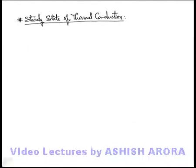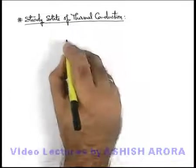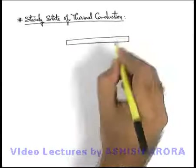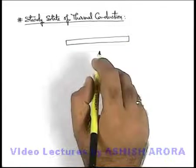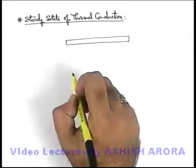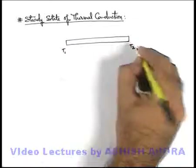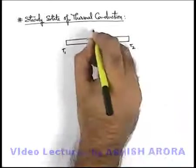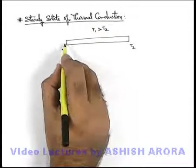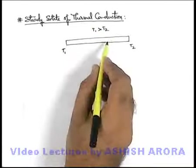Now we'll discuss a specific mode of thermal conduction — that is, the steady state of thermal conduction. As we discussed, thermal conduction is a transfer of heat by means of continuous oscillations and collisions of medium particles. For a given medium, the temperatures at the 2 ends are T1 and T2, with T1 greater than T2. Obviously, the thermal agitation or vibrational motion at the high temperature end will be higher than that at the right end.